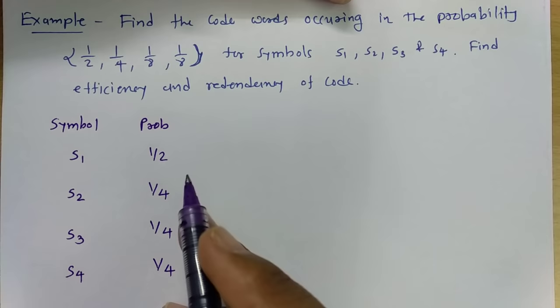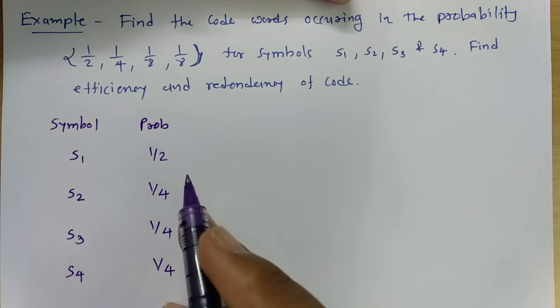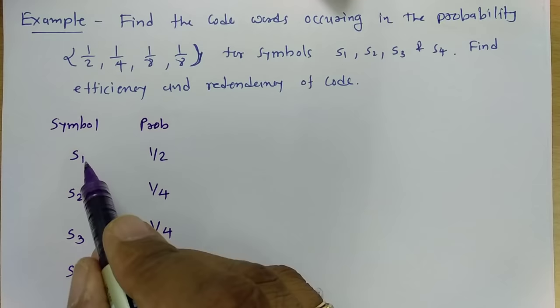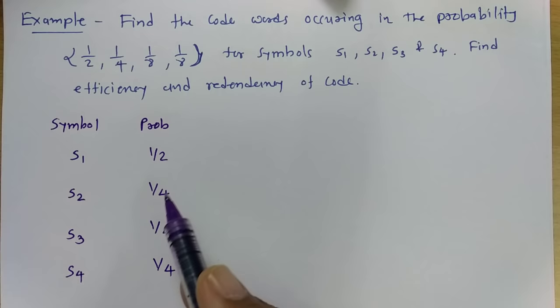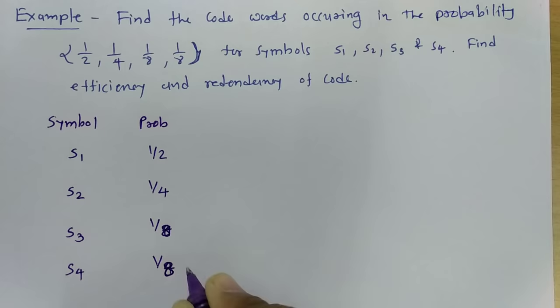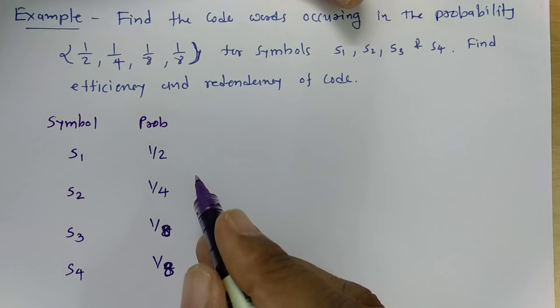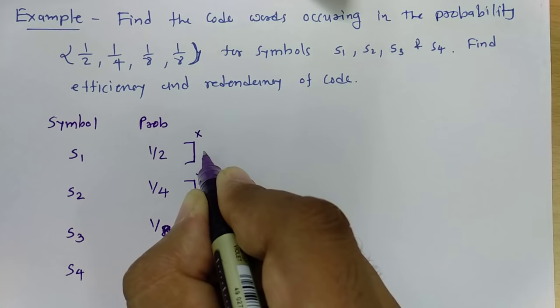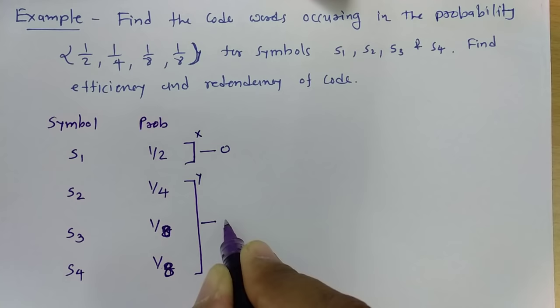Second step: divide the probabilities into two subsets with equal probability. Here we can easily divide: S1 has probability 1/2, and the addition of S2, S3, and S4 — which have probabilities 1/8, 1/8, and 1/8 — also sums to 1/2. So we divide into subset X containing S1, and subset Y containing S2, S3, S4. Assign bit 0 to subset X and bit 1 to subset Y.